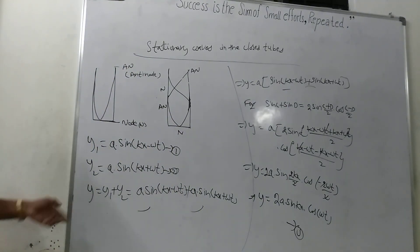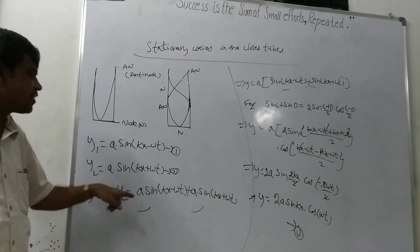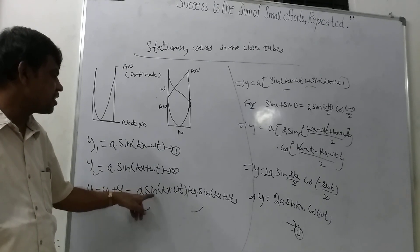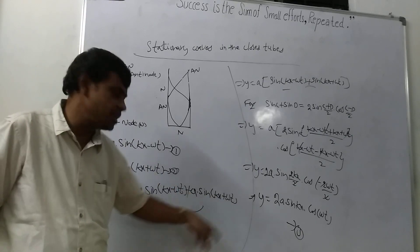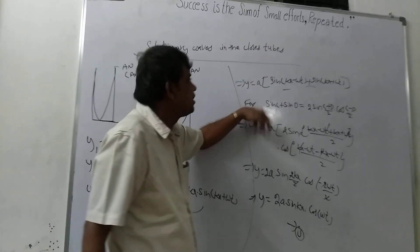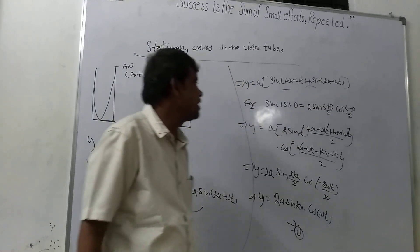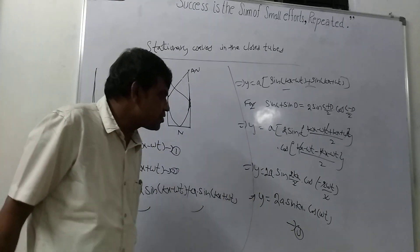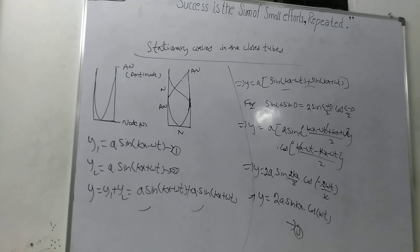Now y equals to y1 plus y2. What is y1? a into sin of kx minus omega t, plus y2 which is a into sin of kx plus omega t. Taking a common and applying sin C plus sin E equals two sin((C+E)/2) cos((C-E)/2), finally y equals to 2a sin(kx) cos(omega t). That is the stationary wave equation.